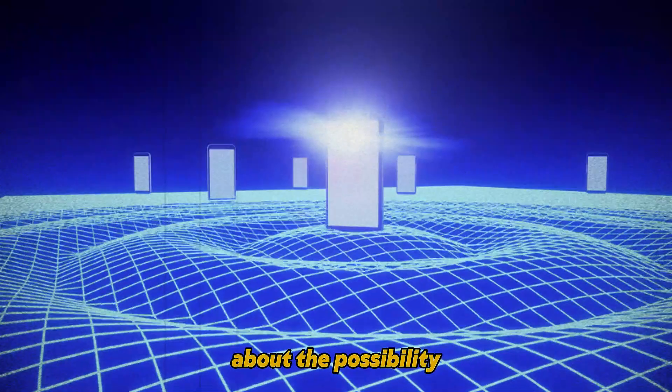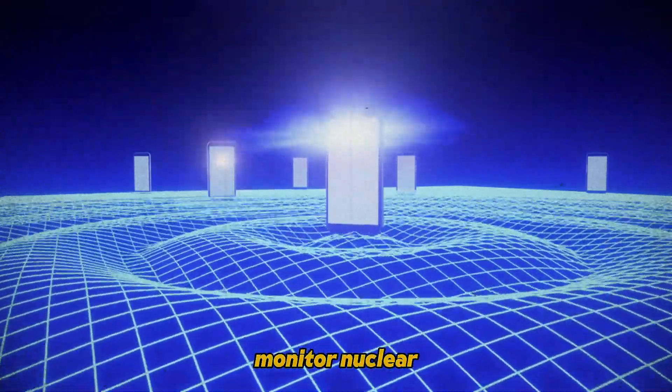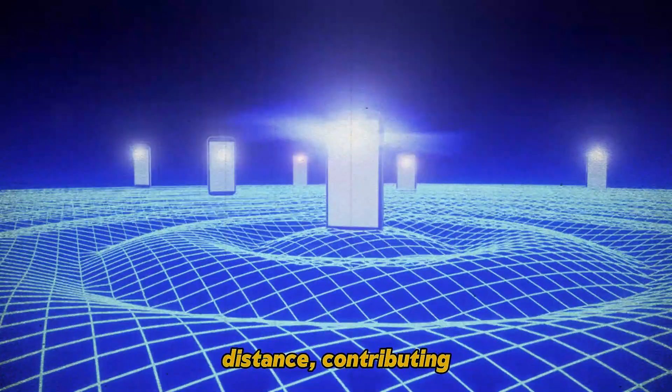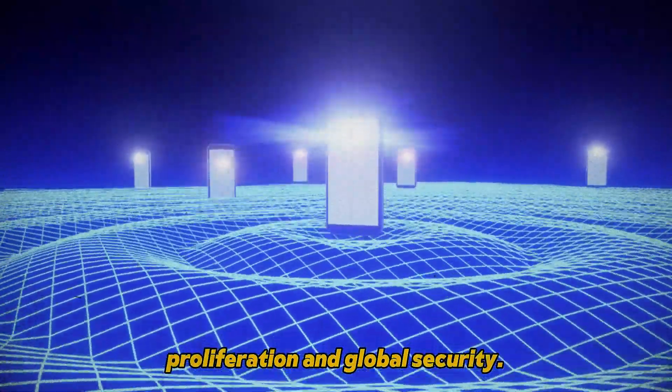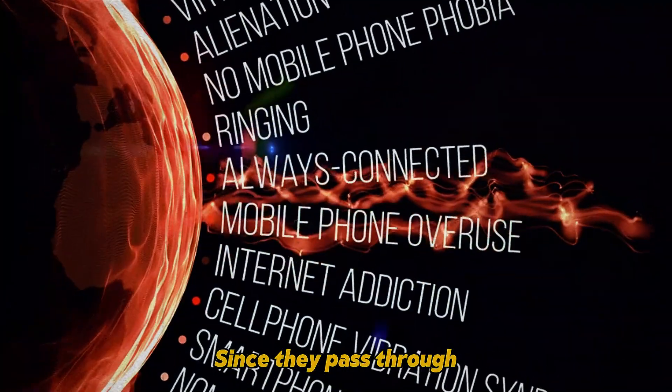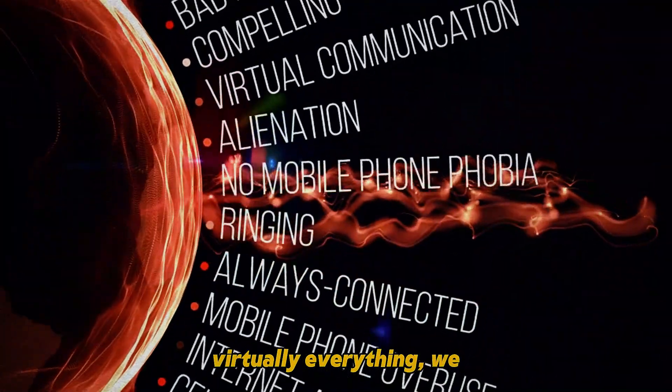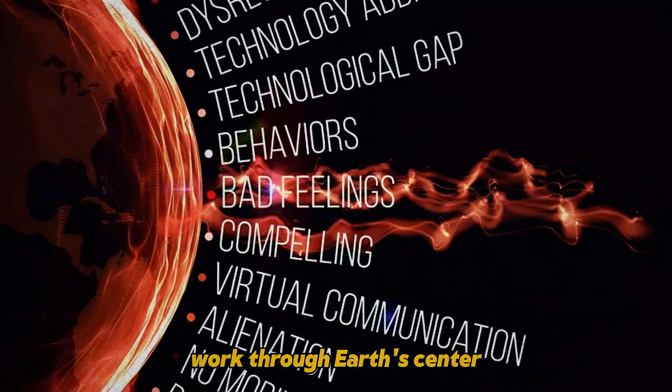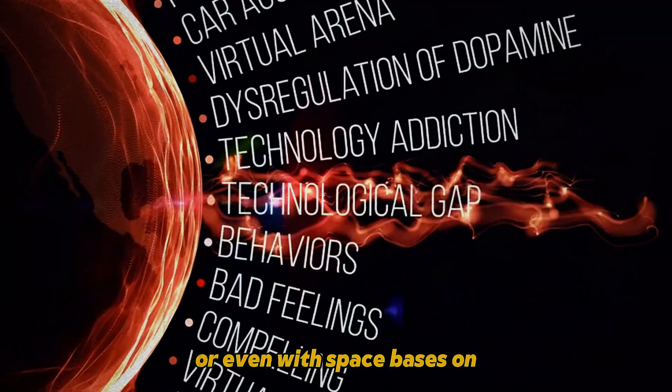Think about the possibility of using neutrinos to monitor nuclear reactors from a distance, contributing to nuclear non-proliferation and global security. What if we could use neutrinos for communication? Since they pass through virtually everything, we could establish communications that would work through Earth's center, or even with space bases on the other side of the sun.